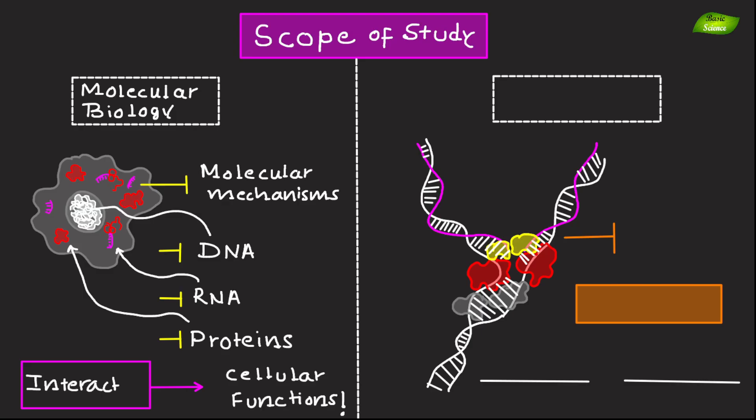An example includes investigating the process of DNA replication to understand how cells duplicate their genetic material before cell division. This can help in developing treatments for diseases caused by replication errors, such as cancer.